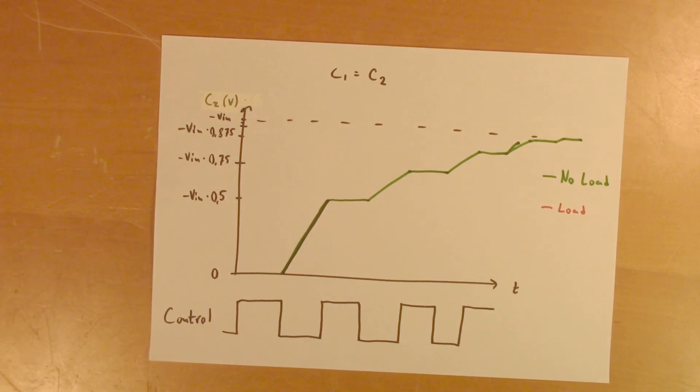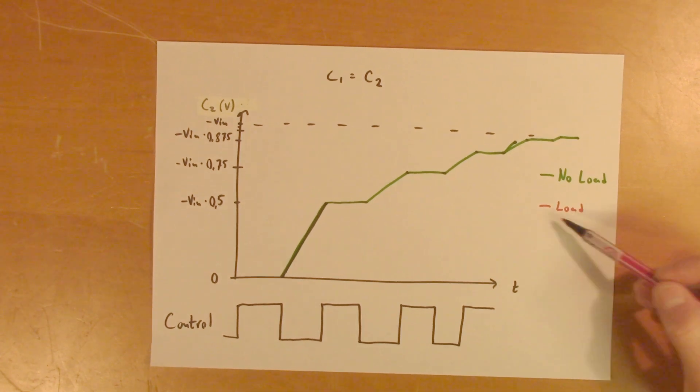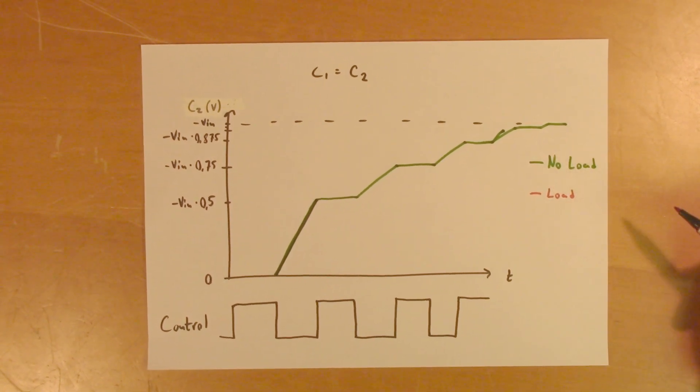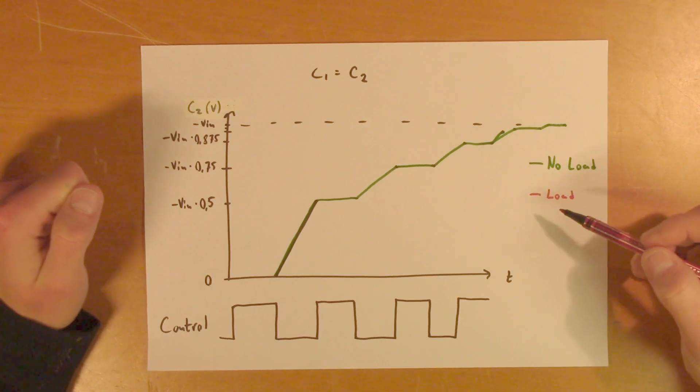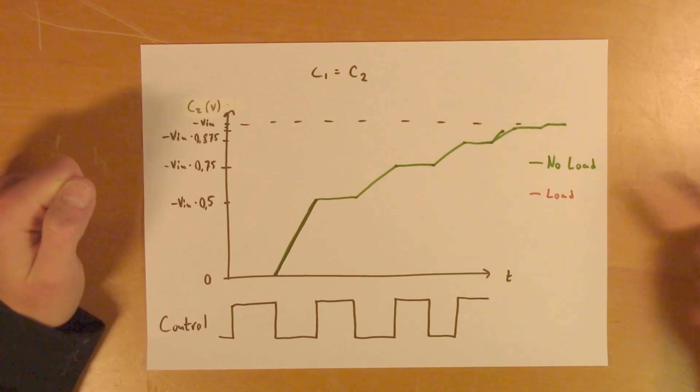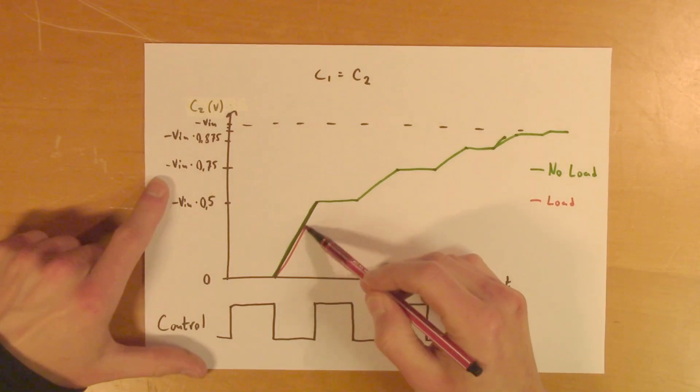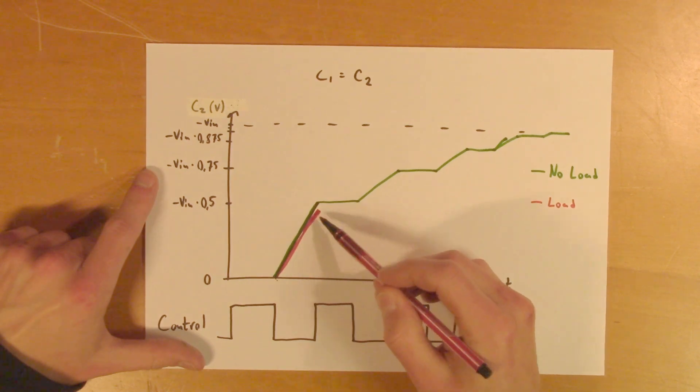So this is the ideal case. No load. But in case you have a load, which you will have if you use this in a circuit, of course, there will be a constant current draw from C2 at all time. Which means that it will not reach quite as high as in the ideal case.